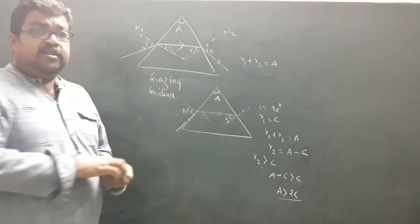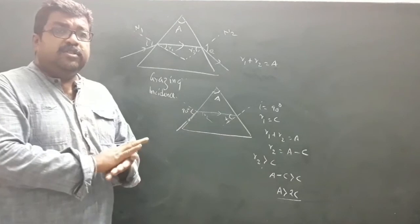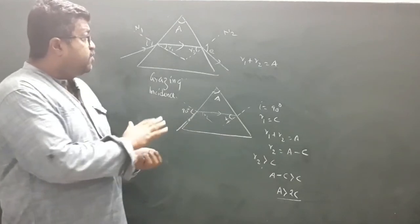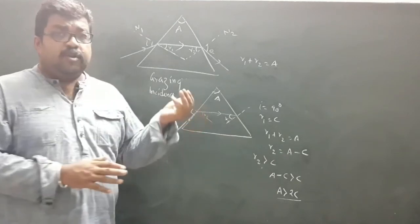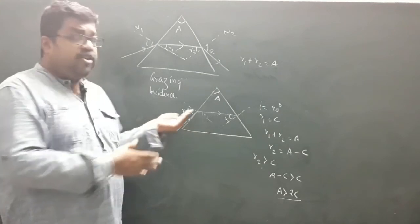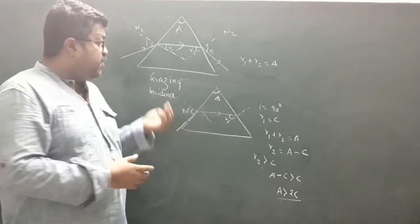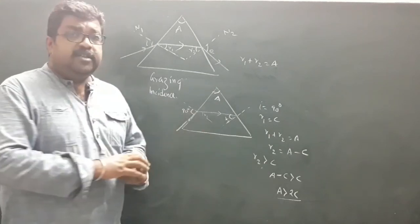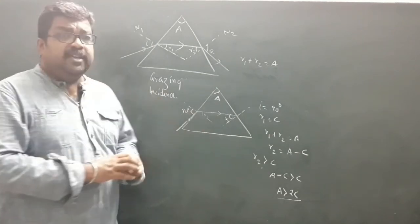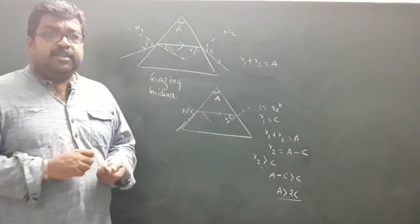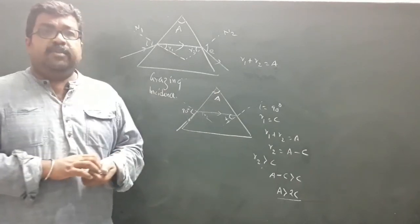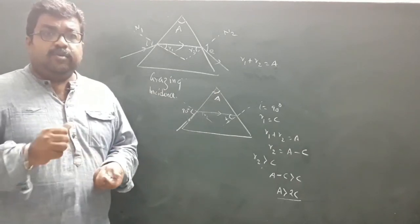So these are the two basic concepts related to condition for emergence or non-emergence: when the ray is incident normally, and when the ray undergoes grazing incidence. I hope this concept is clear to you and this video was beneficial to you. Good luck.